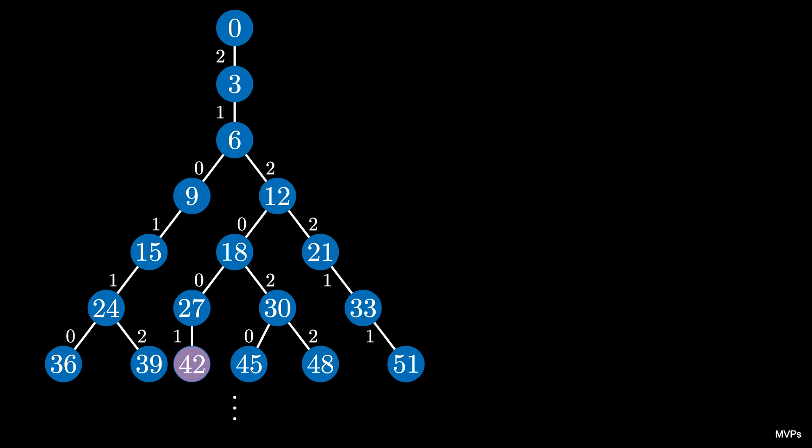Now suppose we're interested in the number 42. We can highlight the number 42 in this labeled tree, and we can see that it has a path to the root node 0.